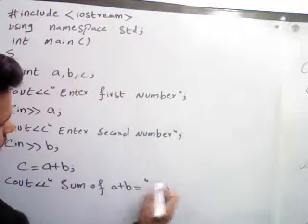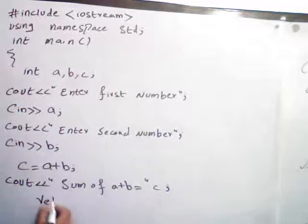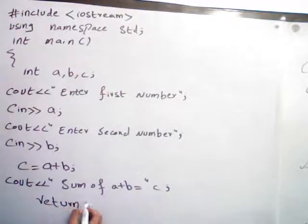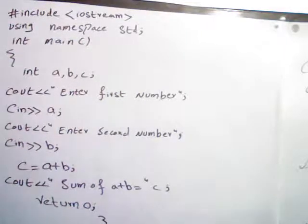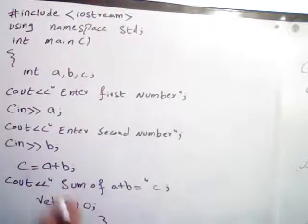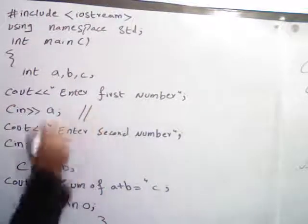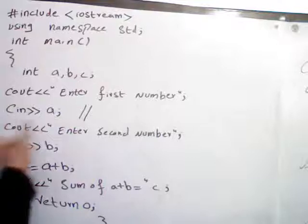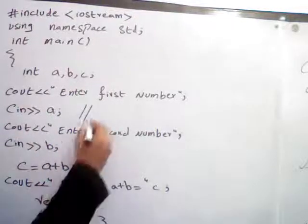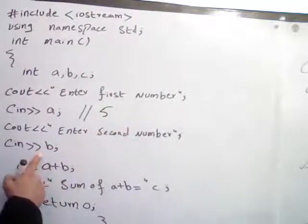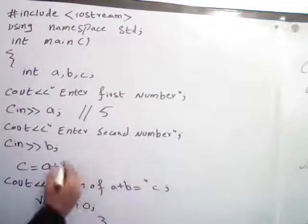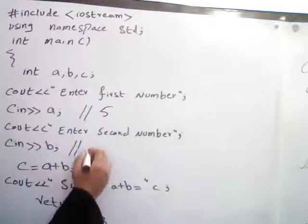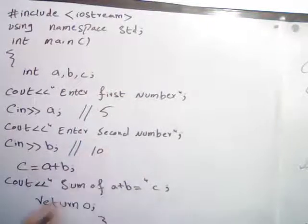Now it adds two numbers. How can we add? c equals a plus b, so 5 plus 10 equals 15. So answer of a plus b equals 15. So c is equal to 15. So the message is printed out: sum of a plus b equals output.